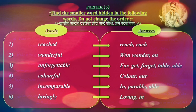Pointer fifth. Find the smaller words hidden in the following words — do not change the order. Khalil Shabdaan, Dada Lela, Chota Shabda Shodha, Kram Badalu Naka. First word: reached — hidden words: reach, each. Second word: wonderful — hidden words: own, wonder.